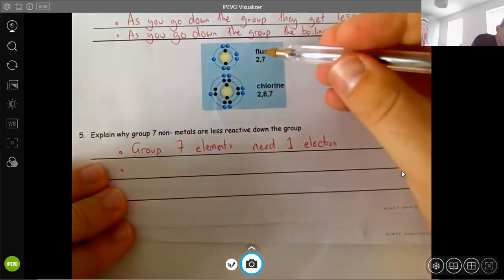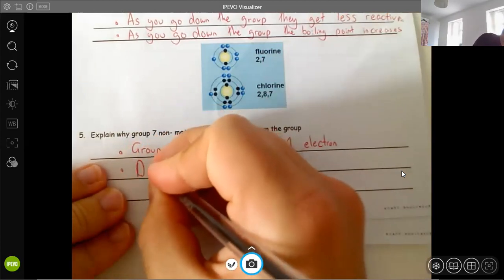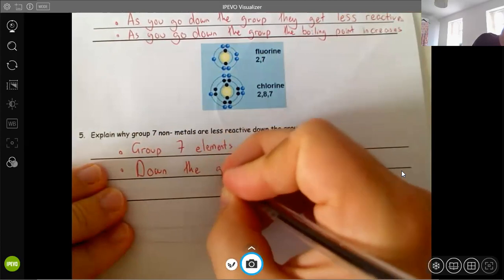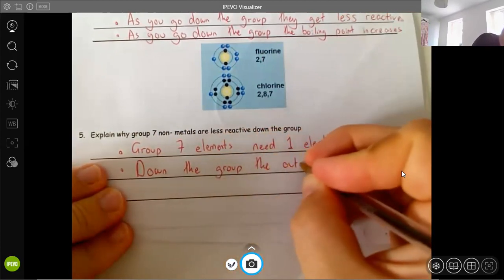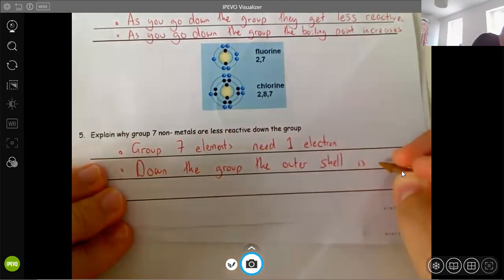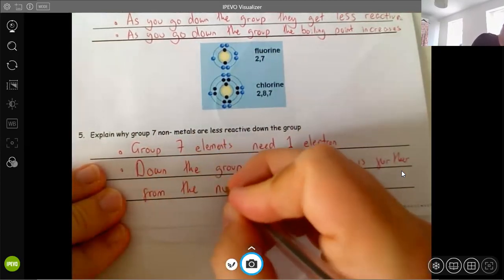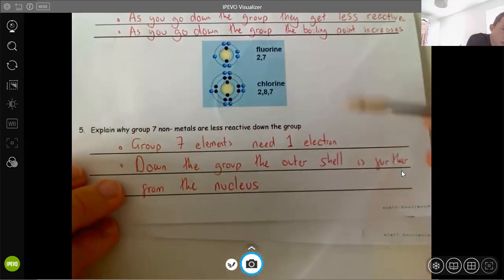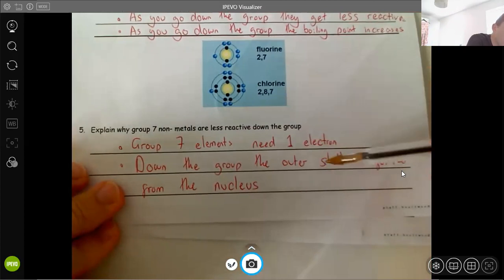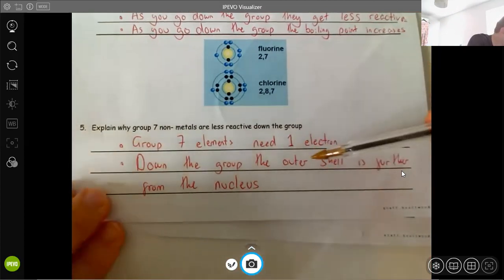However, as they go down, they get bigger. So down the group, the outer shell is further from the nucleus. So again, this is something, okay? Now so far, nothing new. Need one electron, the further you are away, okay, the bigger they are. So the further down the group you go, the bigger they are.